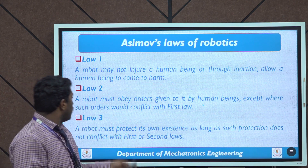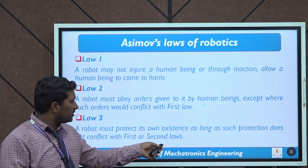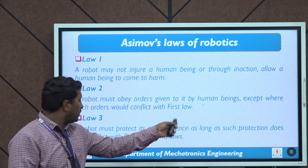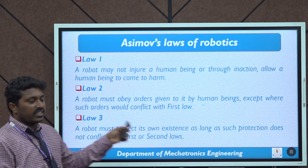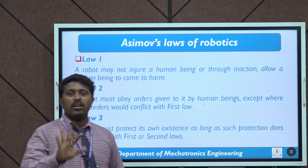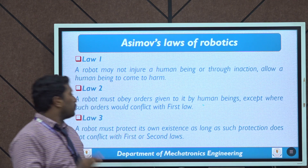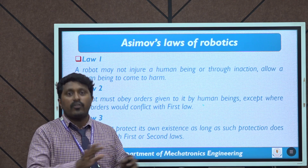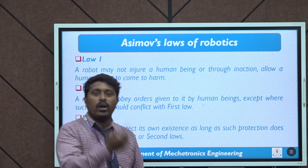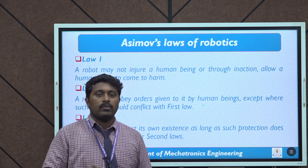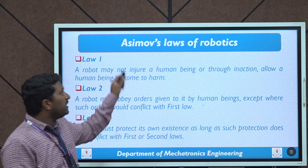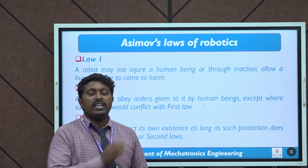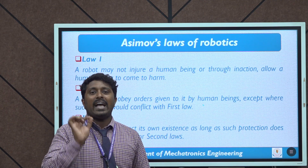The third law: a robot must protect its own existence, as long as such protection does not conflict with the first or second law. These are the three basic and important laws of robotics, framed by Isaac Asimov.